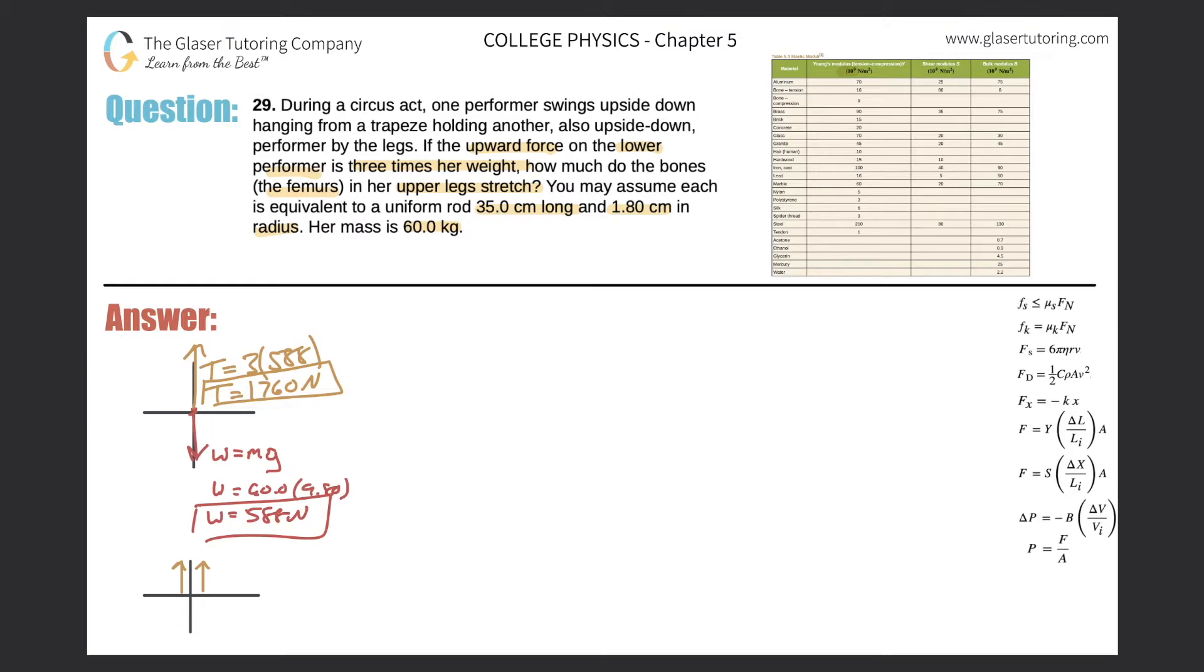I mean, you could do the total and then just take your answer and divide it by two. That you could do as well. But I think this makes a little more logical sense. So let's take the 1760 and divide that by two. We get 880. So each femur has a tensional force of 880 newtons. So that's great.